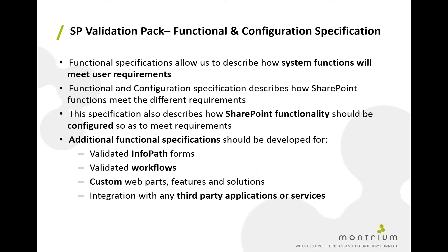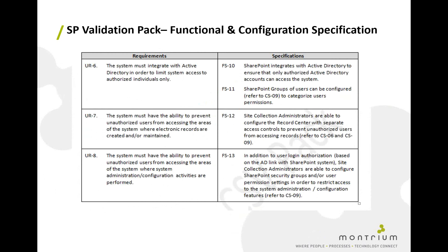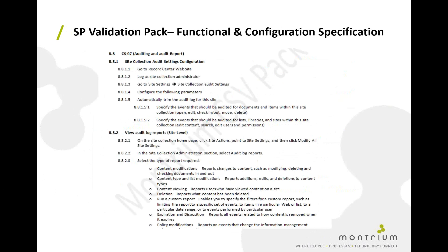Any other applications — such as InfoPath forms, workflows, custom web parts, features or solutions, or third-party applications — would require additional functional specifications and configuration specifications. This extract shows all requirements on the left-hand side, referenced by unique identifiers, and on the right-hand side the functionality within SharePoint allowing us to meet those requirements — building traceability as we go. Another part of our functional and configuration specification clearly describes all steps required to properly configure SharePoint to meet the requirements of 21 CFR Part 11.